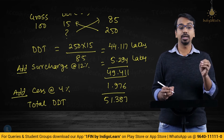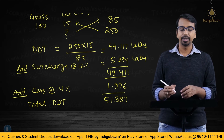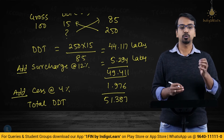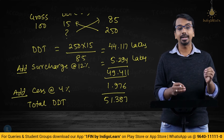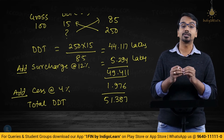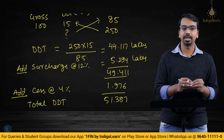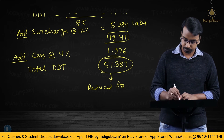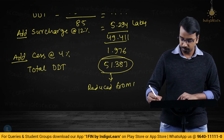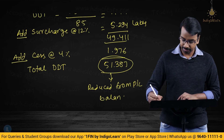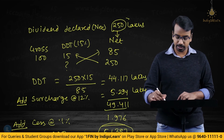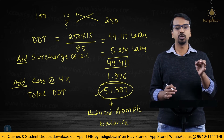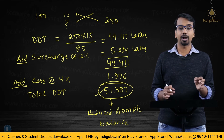Now how do we present this in the financial statements? Should we debit it to the statement of profit and loss, show it as an expense, or show it under current taxation under income tax? The answer is no — this is not an item shown in the P&L statement. This will be reduced from the P&L balance. Not only will you adjust the 250 lakhs of dividend, but even the 51.387 lakhs of Dividend Distribution Tax will be reduced from the balance in profit and loss account.